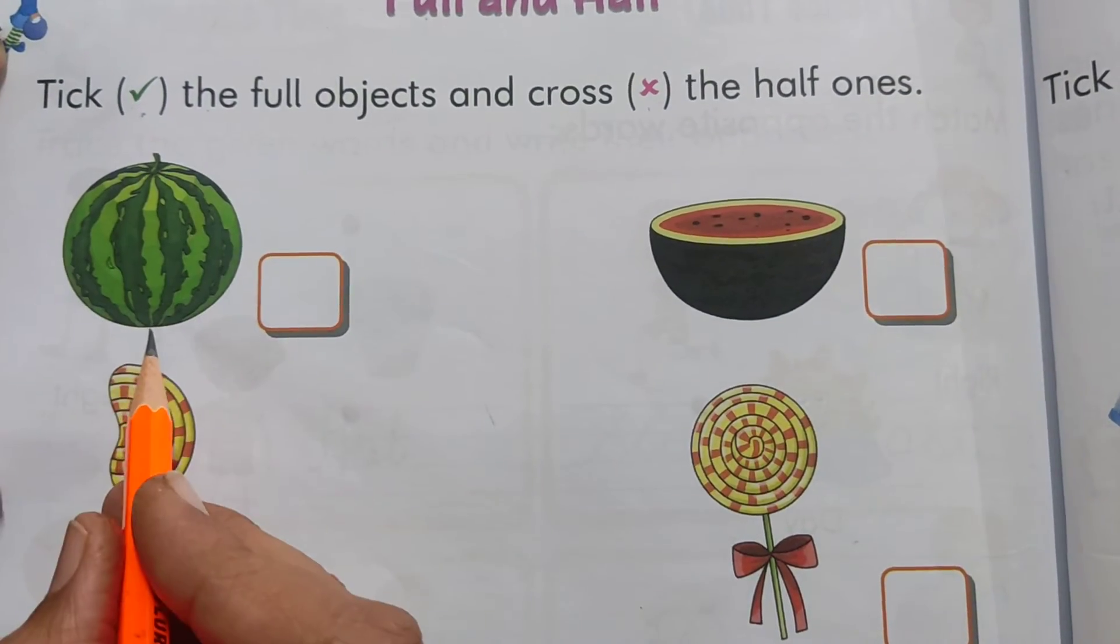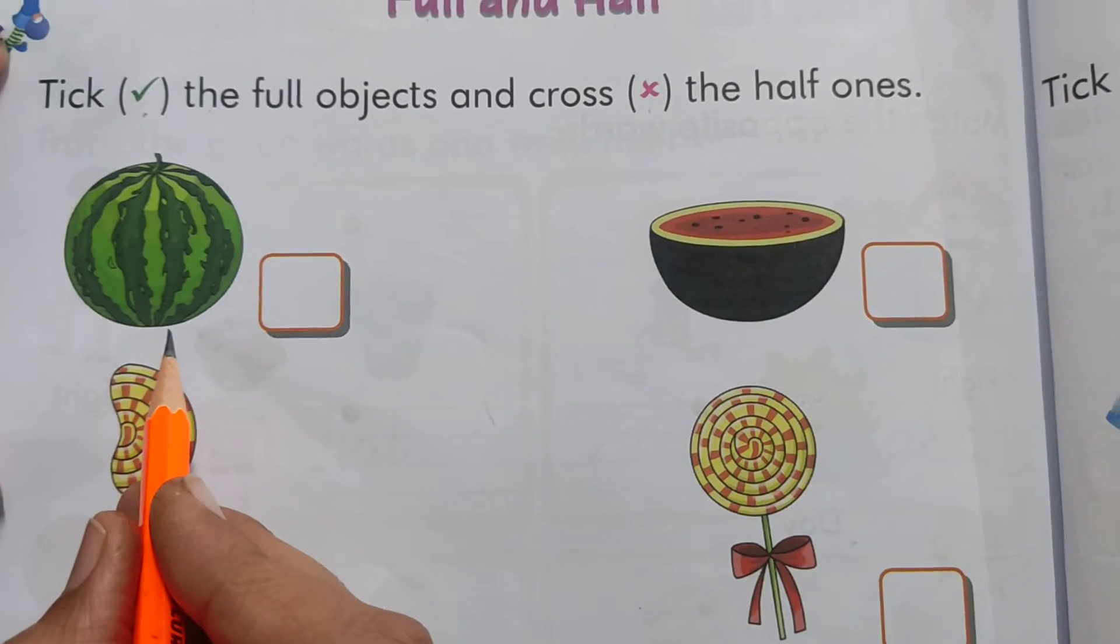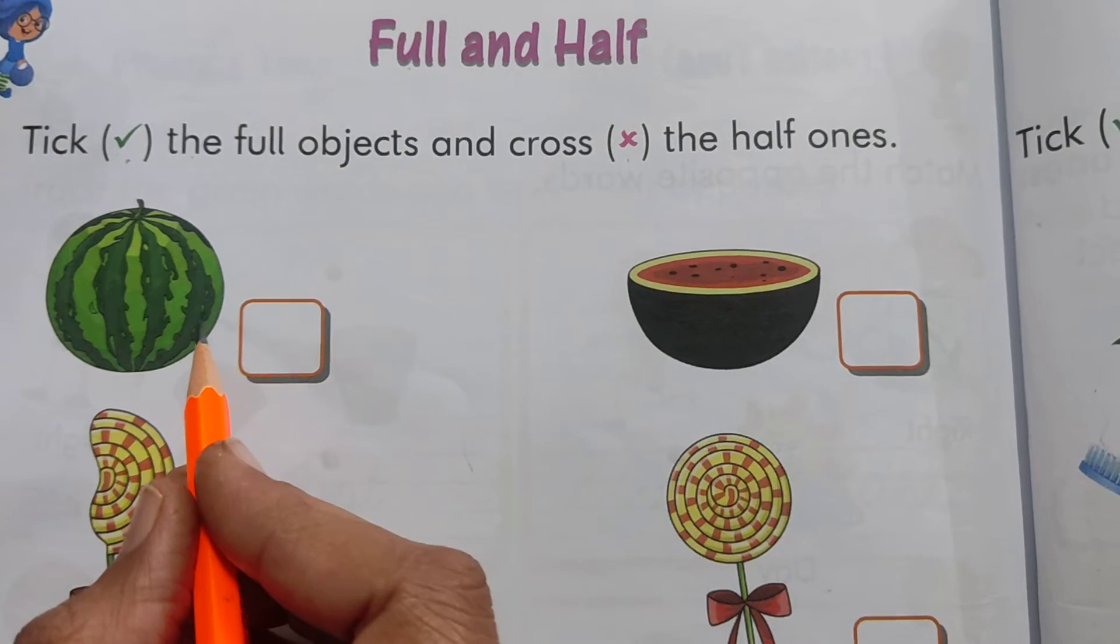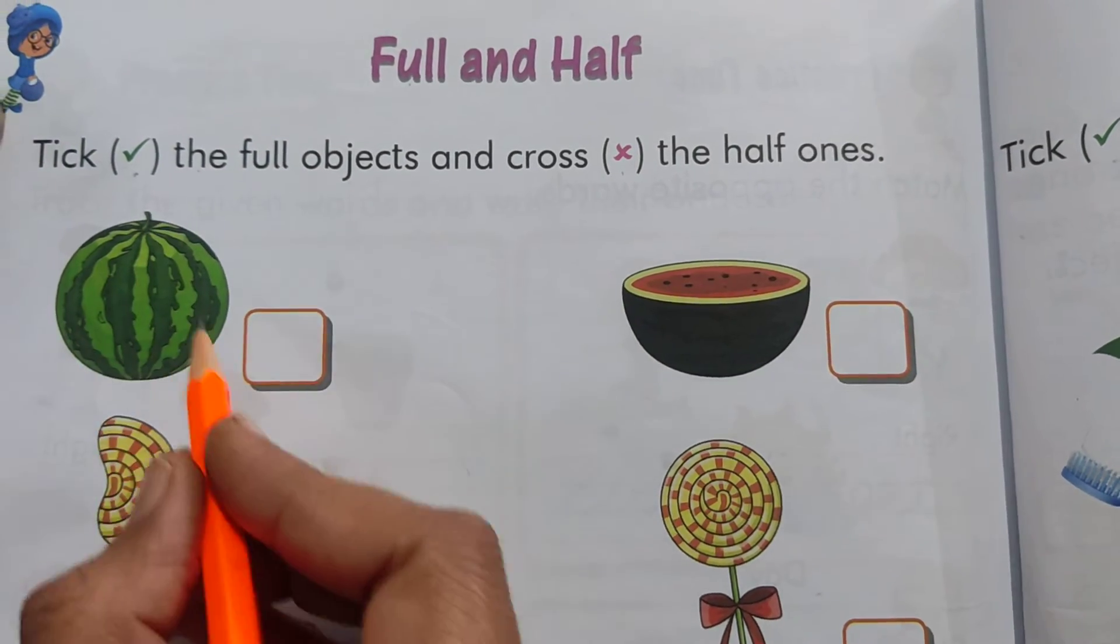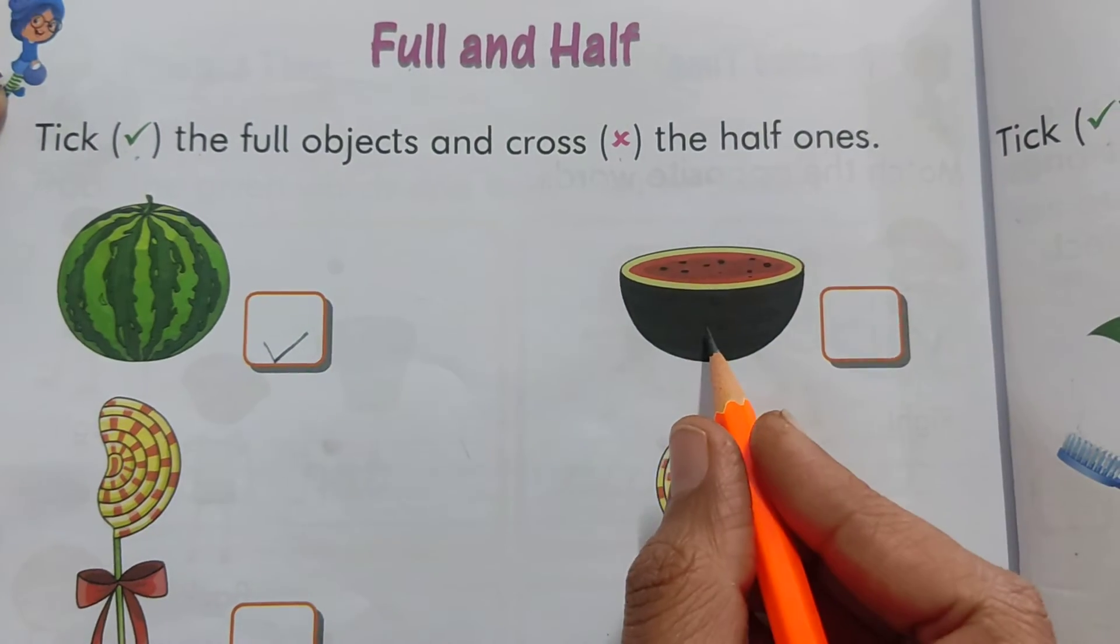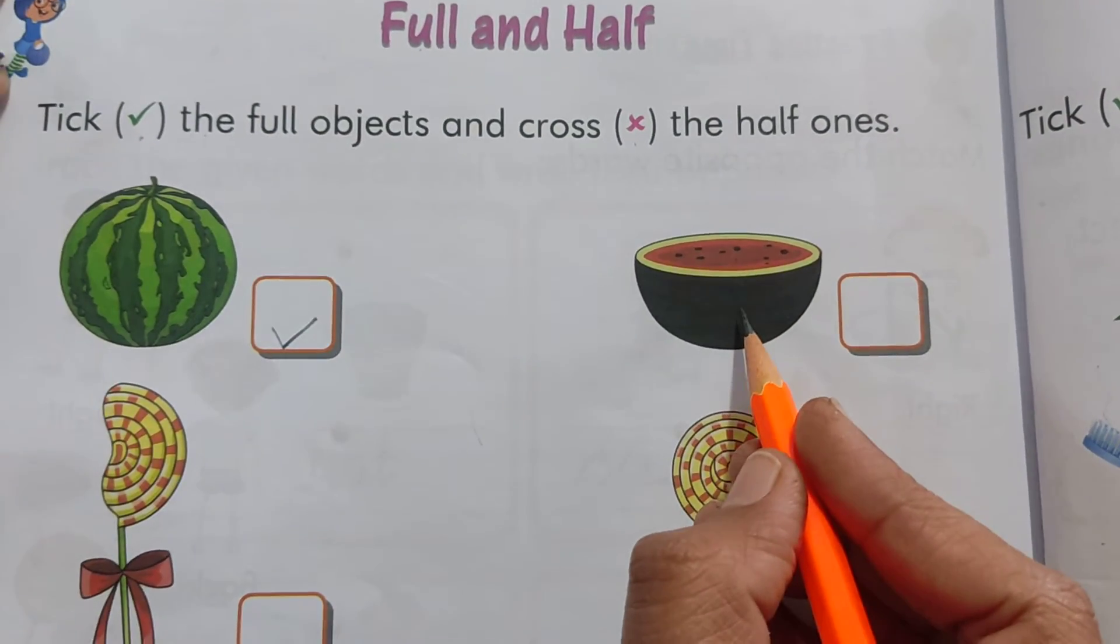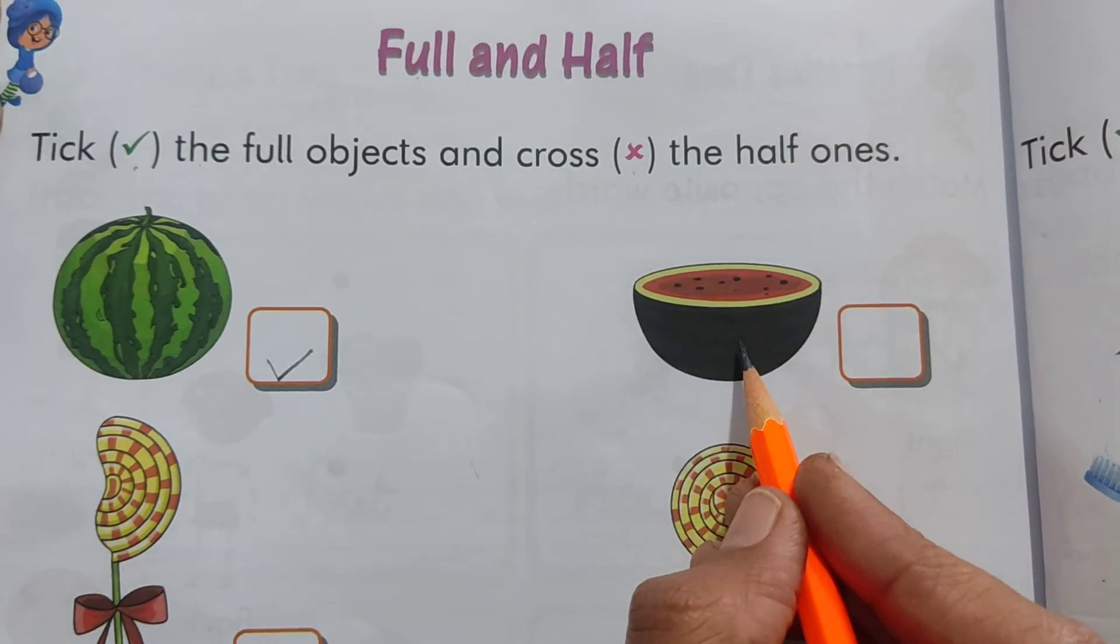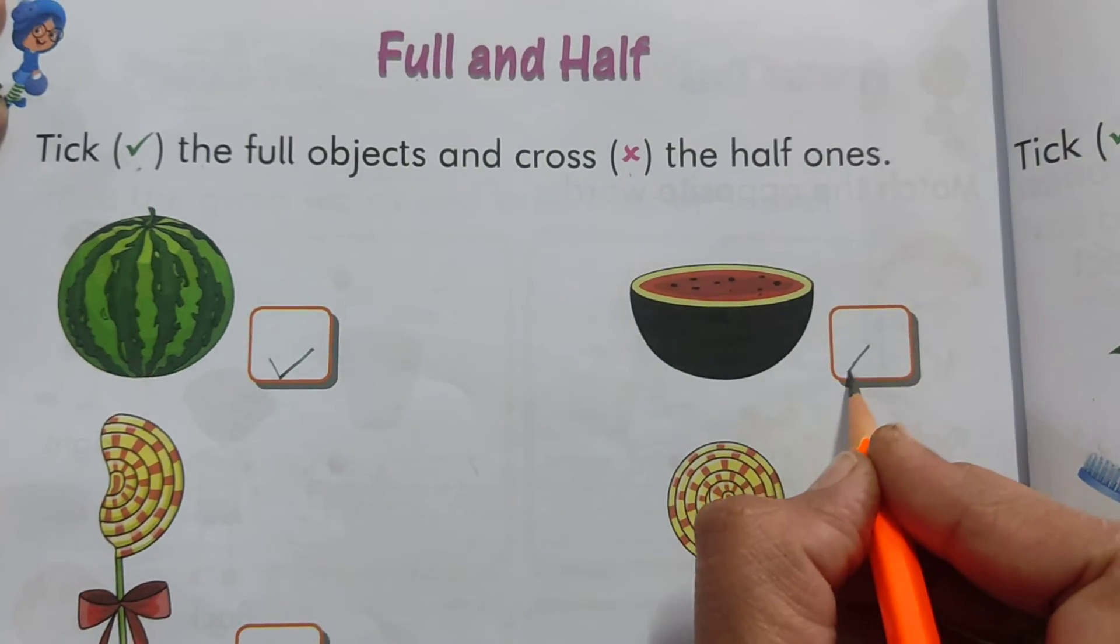This is the picture of a fruit. Its name is watermelon. Ye full hai, ya half hai? Ye half hai? No. This is full. So we will put a tick over here. Now, again this is the picture of a fruit named watermelon. So ye half hai. Yes. And we will put cross over here.